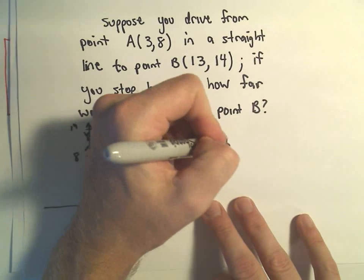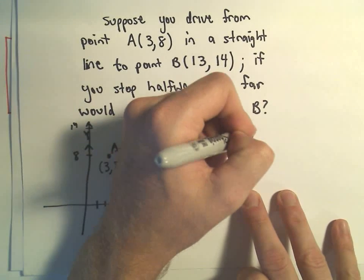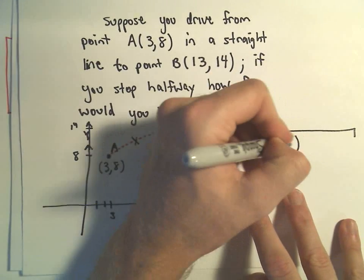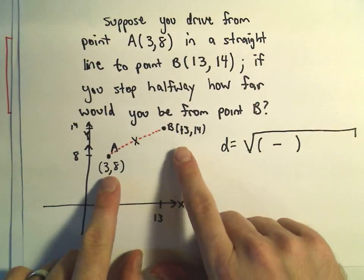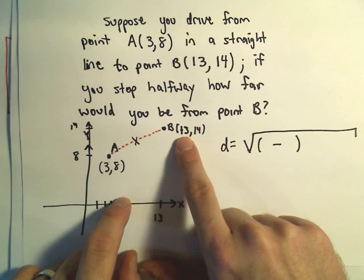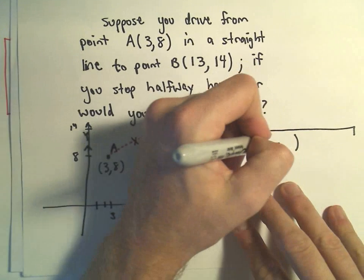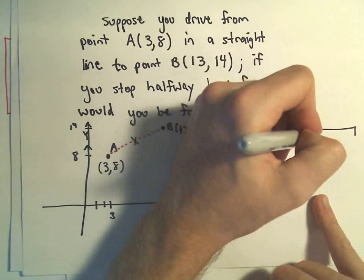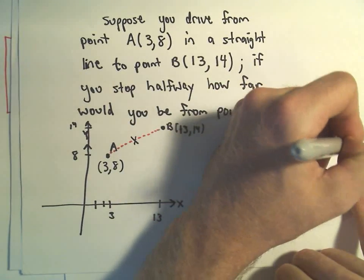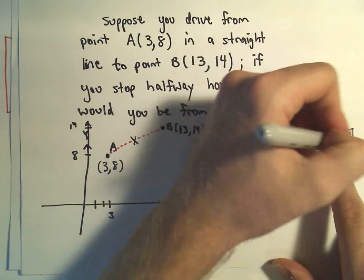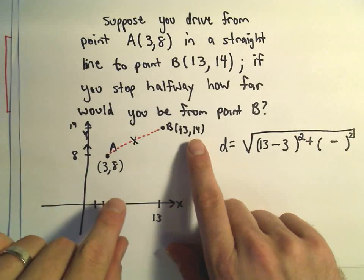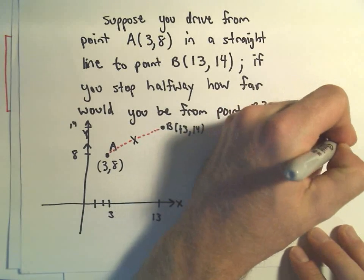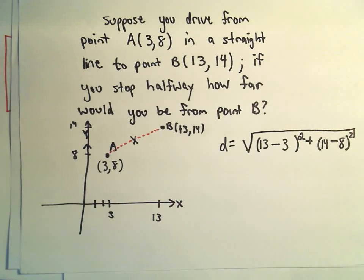Okay, so to find the distance, we take a square root. Whatever the x-coordinates are, you just subtract them, so I'm gonna take the x-coordinate of 13 minus 3, and then we square that, and we always put a plus sign, and then we do the same thing with the y-coordinates. I just drop in their values, so I would have 14 minus 8.